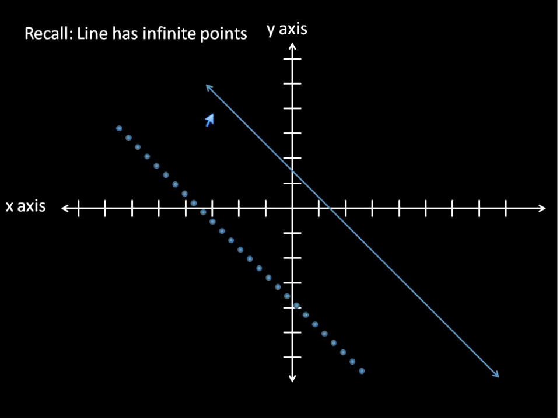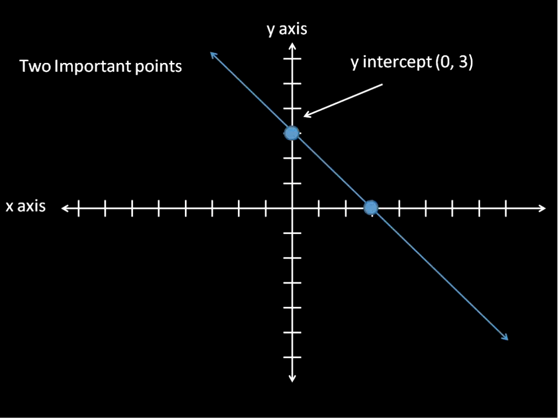Now we're going to look specifically at two points on a line. The first is right here, and that's called the y-intercept. The y-intercept is where the line crosses the y-axis. The second is the x-intercept, and that's where a line crosses the x-axis. These two points are first off the easiest to calculate, and secondly, they're also really important points because they're the places where they cross the axis.